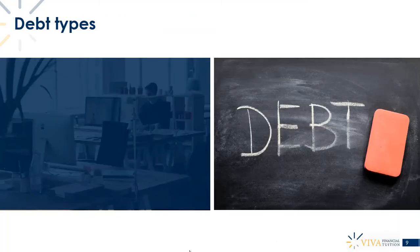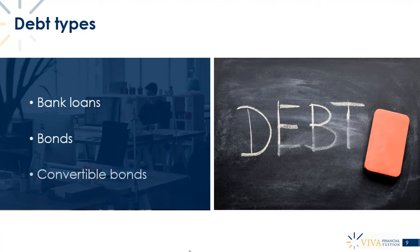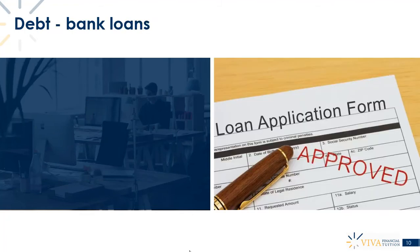Moving on and thinking about types of debt: debt is where you have a fixed commitment to repay at a later date. Consequently, redeemable preference shares could be classified as debt. The types of debt we need to discuss are bank loans, bonds, and convertible bonds. This chapter is about long-term finance, so we're not thinking about overdrafts, which are short-term and repayable on demand.